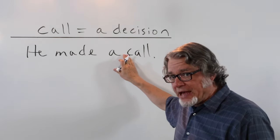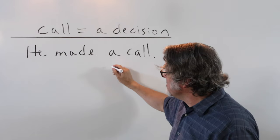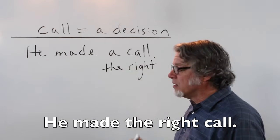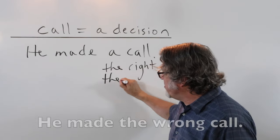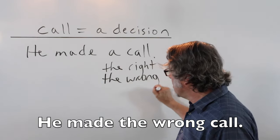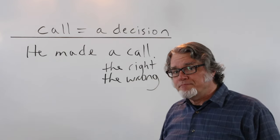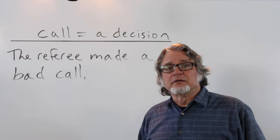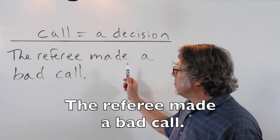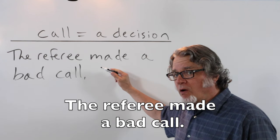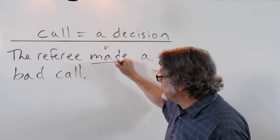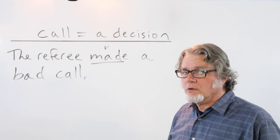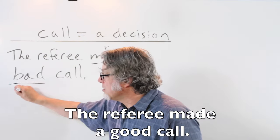The words right and wrong are also used as adjectives for call. He made the right call or he made the wrong call - that would be a bad decision. You'll often hear this in sports. In soccer or football, the referee made a bad call. This verb is often used with call, or the referee made a good call.